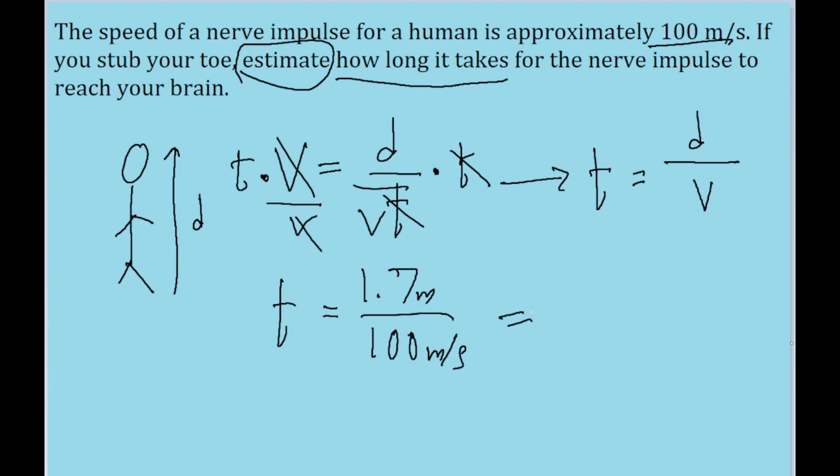And if you put this into your calculator, in fact you don't even need to put this into your calculator, because if we're dividing by a power of 10, then really this is just a matter of moving the decimals around. And we just end up with a value of 0.017 seconds.